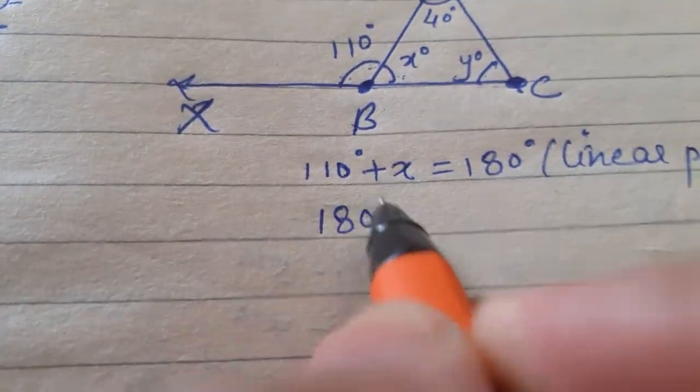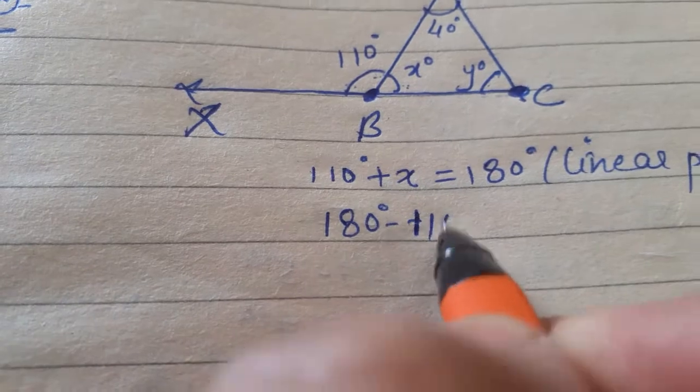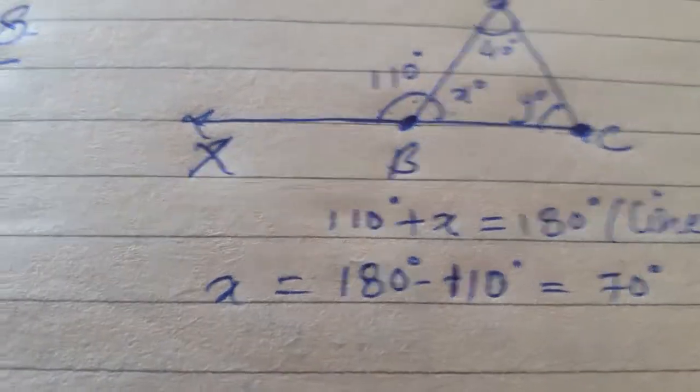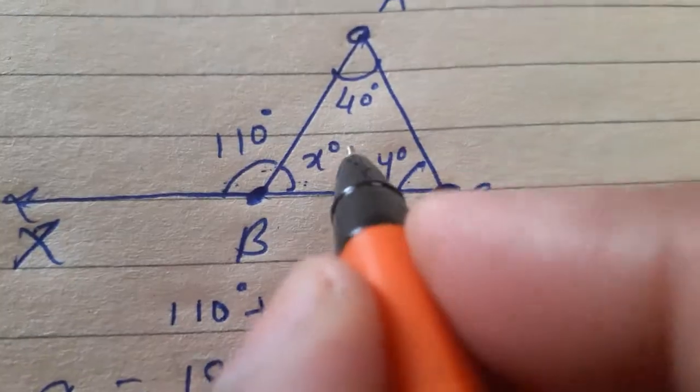So, 180 degrees minus 110 degrees, x is equal to - so this is how much will happen? 70 degrees. Meaning how much value of x will come here? 70 degrees.